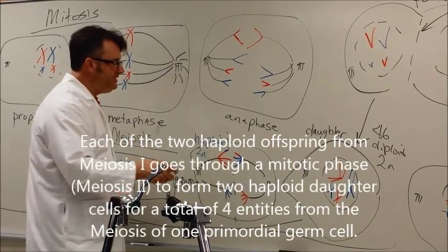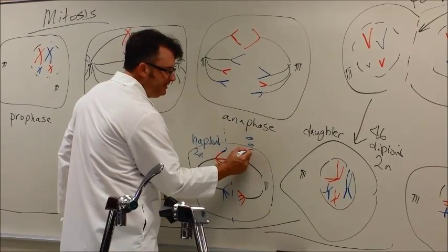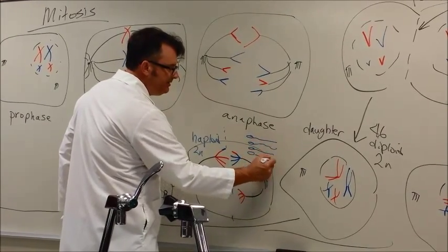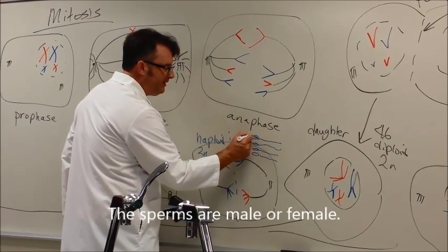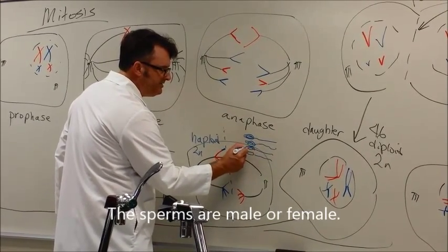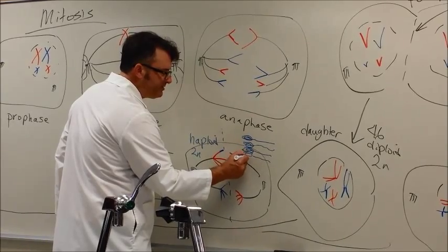You get four swimmers. Tell me what these little guys are. Sperm. Yeah, little sperms right there. We got four little sperms from every division.